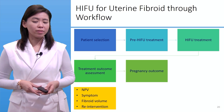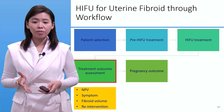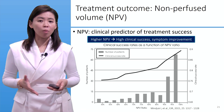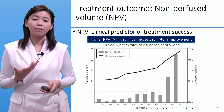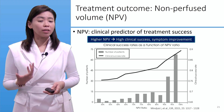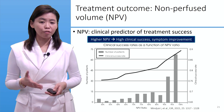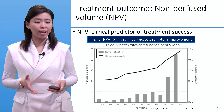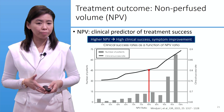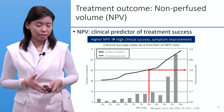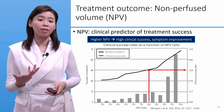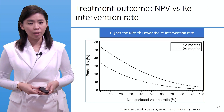Let's take a look at treatment outcome assessment — MPV, symptom, fiber volume, and re-intervention rate. Non-perfused volume (MPV) is a clinical predictor of treatment success. The higher the MPV, the higher the chance of clinical success and better symptom improvement. Looking at the graph, with an MPV ratio at 0.8 there is a 0.8 clinical success rate, so in patient selection we always try to achieve 80% MPV ratio.